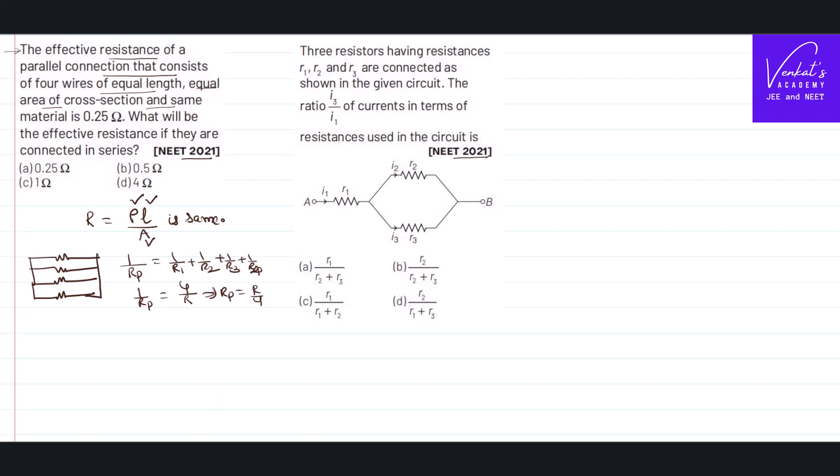It is given that when they are connected in parallel, their effective resistance is 0.25Ω. That means R_parallel is given to you as 0.25. Each resistance divided by 4 equals 0.25, which implies each resistance is 0.25 × 4 = 1Ω.